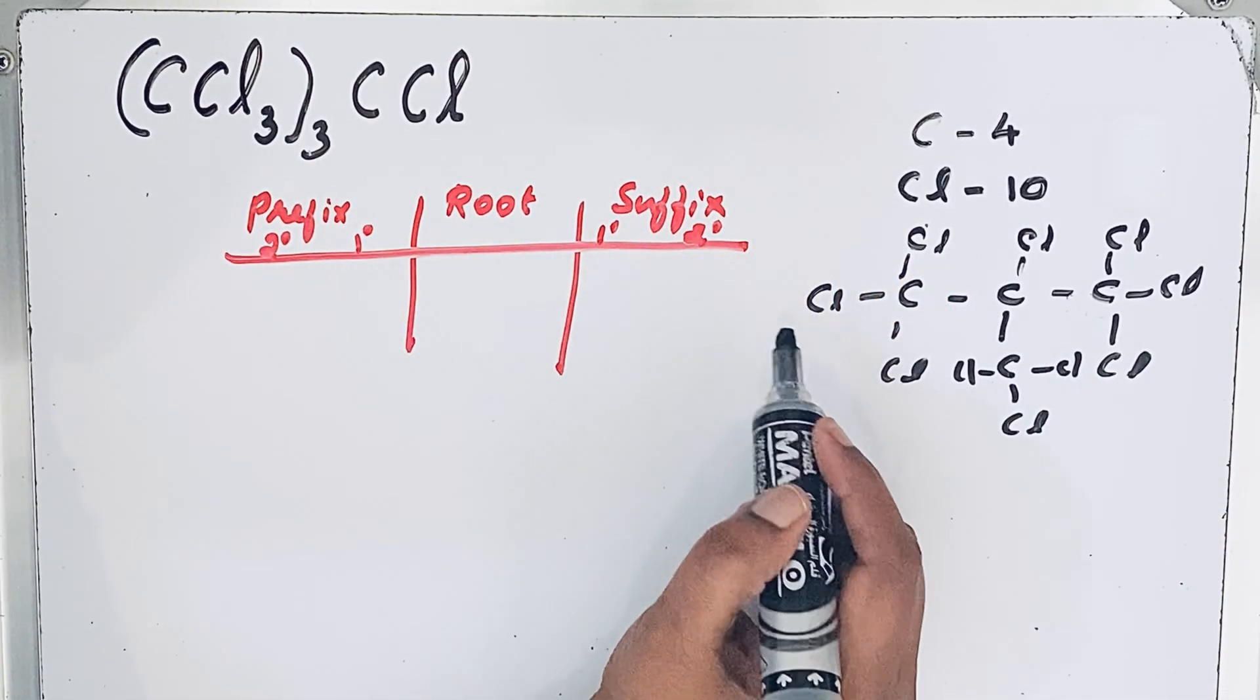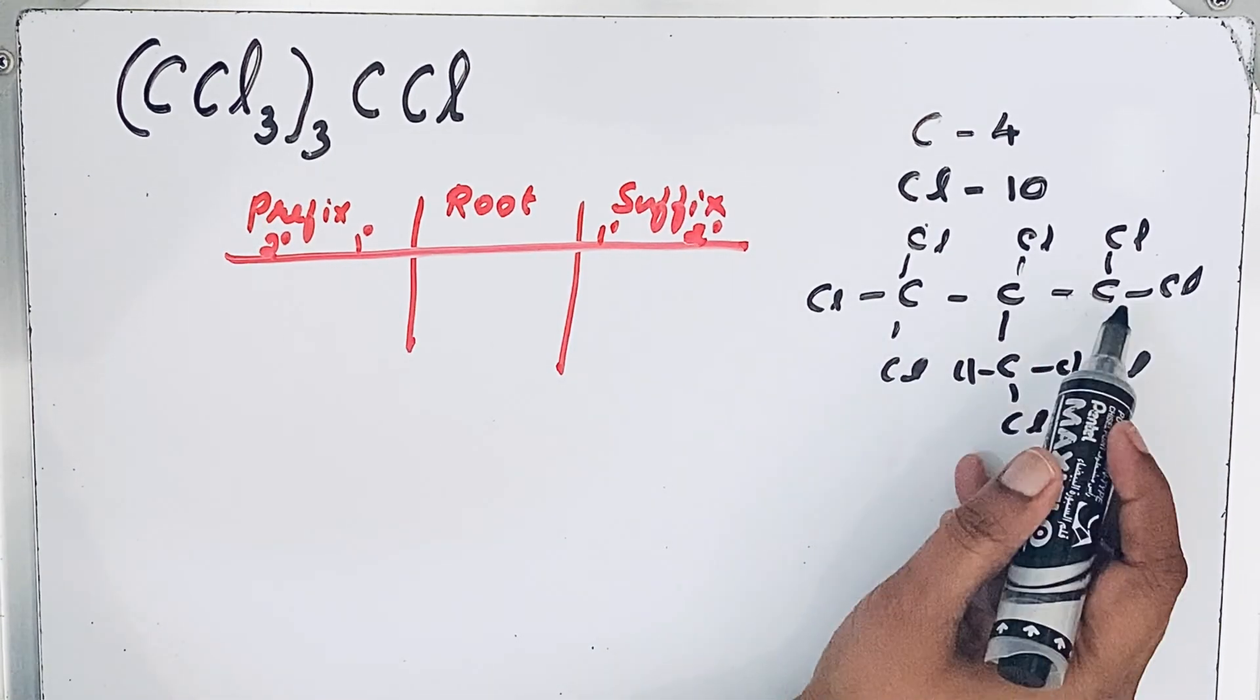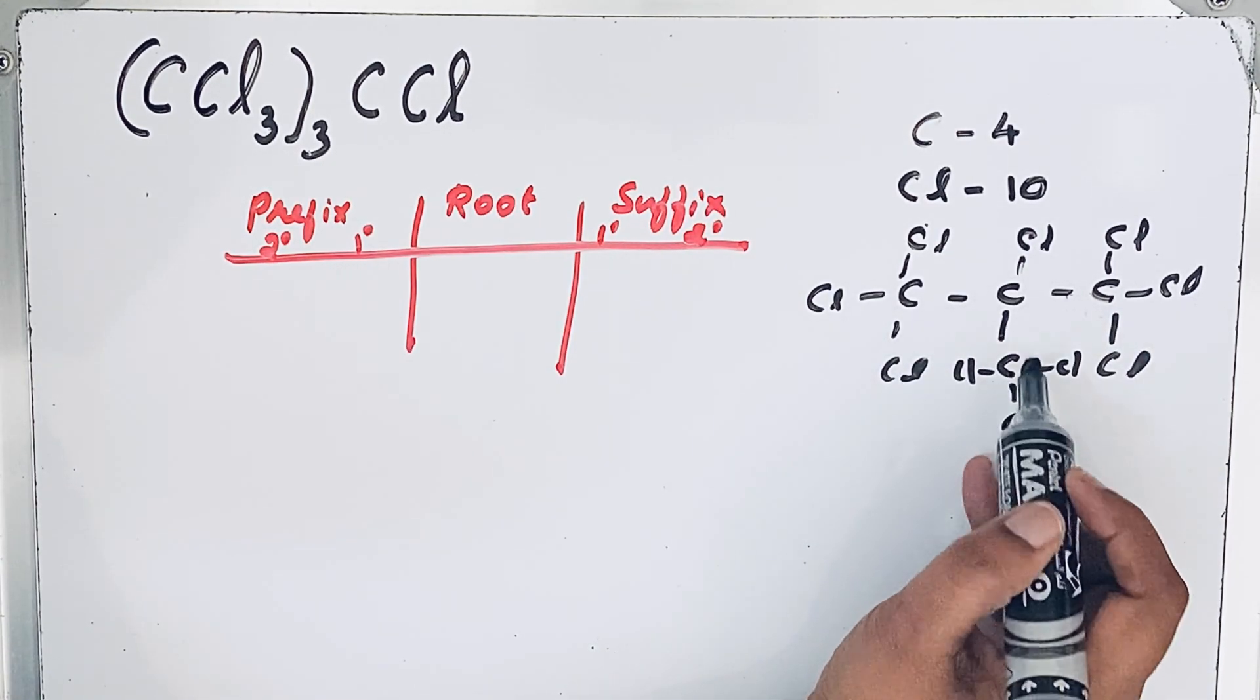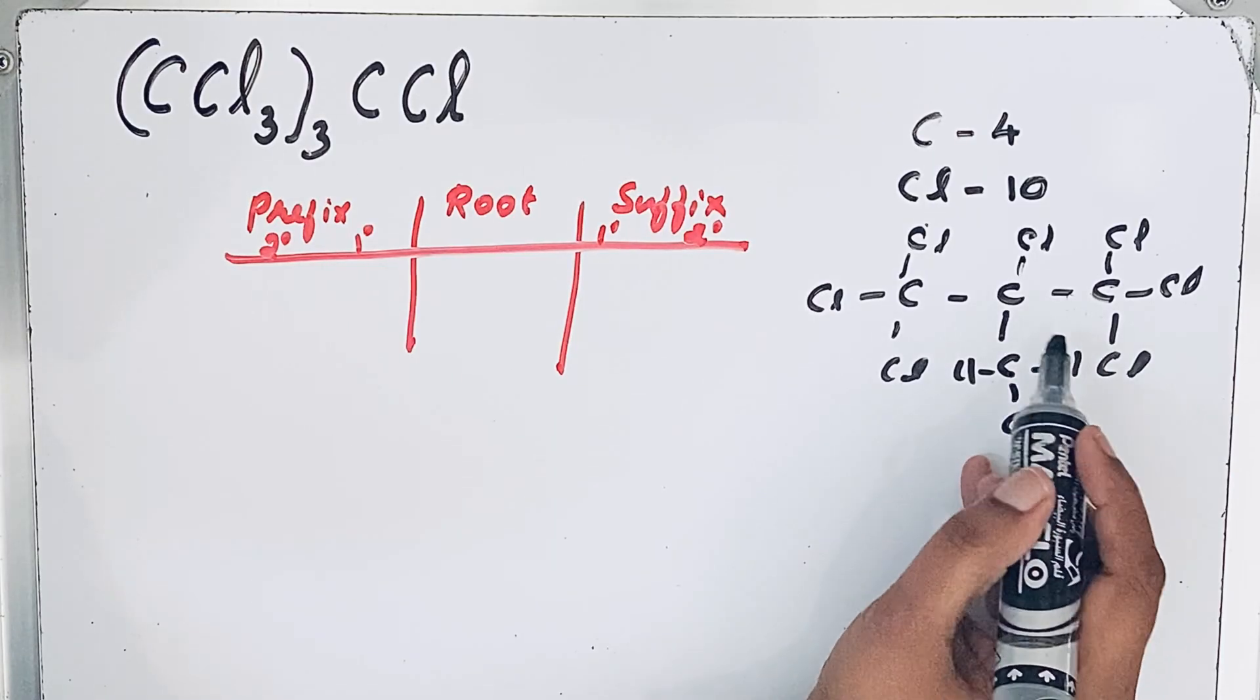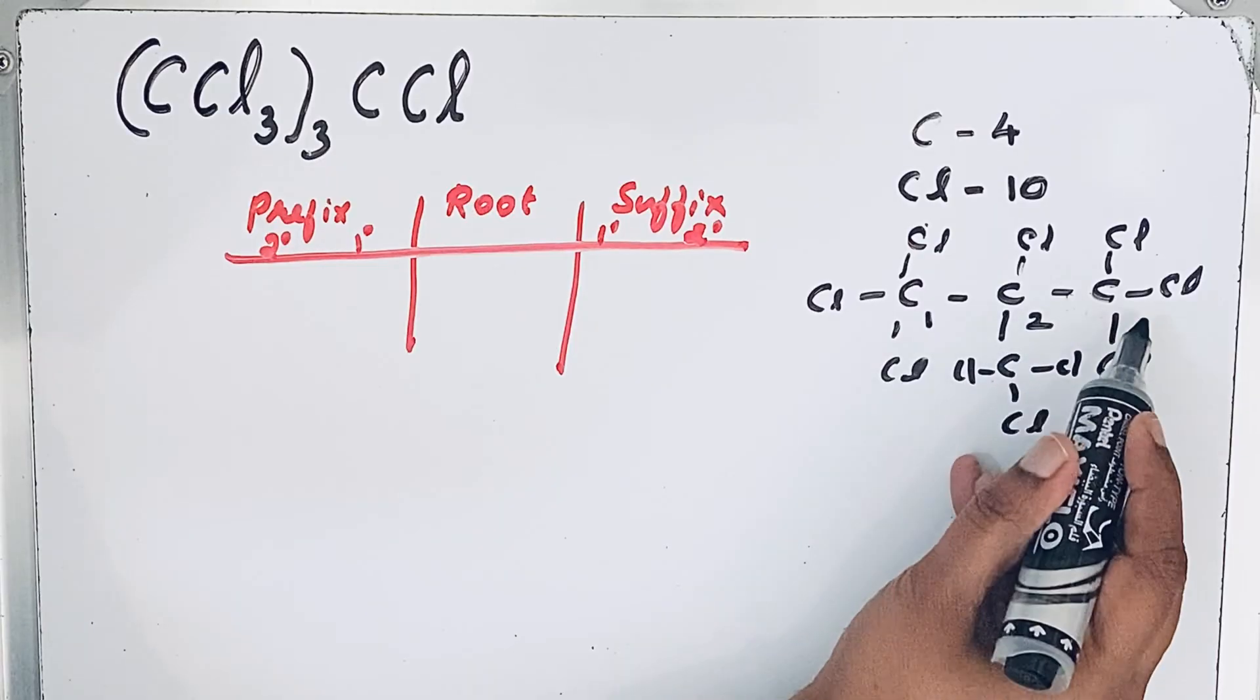Now for giving the numbering, if you see from left to right or right to left, this substituent gets the same number. So we can give that numbering from here: one, two, three.